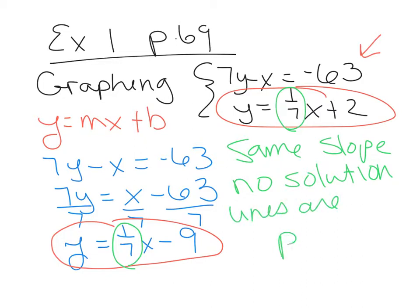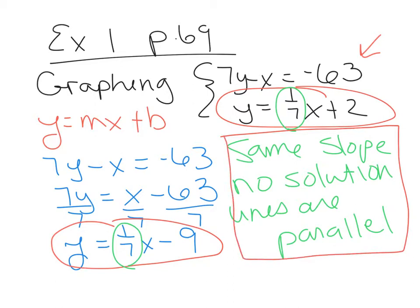Comparing y equals one-seventh x plus 2 and y equals one-seventh x minus 9: they have different b values but the same slope. When two equations have the same slope, the lines are parallel. Parallel lines have no solution. In my class, the answer is 'no solution — lines are parallel.' I want you to tell me why there's no solution, which is that the lines are parallel.